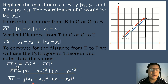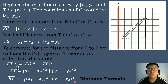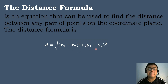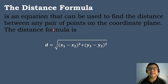This will be the Distance Formula. The distance formula D = √[(x₁ − x₂)² + (y₁ − y₂)²] is an equation that can be used to find the distance between any pair of points on the coordinate plane.